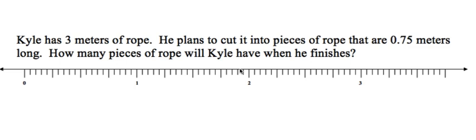I counted and there are 20 little lines in between each whole number, so we know that we are counting up by 5 hundredths.